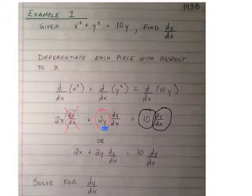So in essence, one could argue that you're basically taking derivatives as per usual, but every time you take a derivative of a y term, you have to remember that you also have to tack on the derivative of y with respect to x. If we simplify all of that out, we get 2x plus 2y dy/dx equals 10 dy/dx.